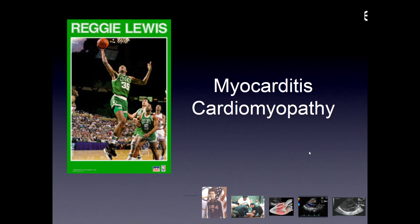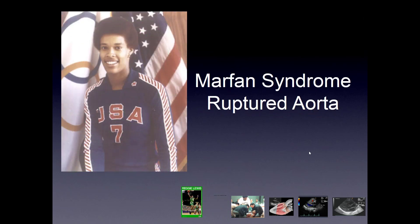Reggie Lewis was a professional basketball player for the Celtics who had a sudden cardiac death during an off-season practice. He died of myocarditis or cardiomyopathy. There was also a young woman who was a silver medal Olympic volleyball player who died of sudden cardiac death from a ruptured aorta. She had Marfan syndrome, which is a risk factor associated with cardiac anomalies, just to keep in mind.